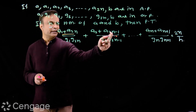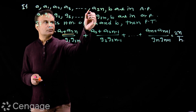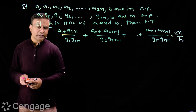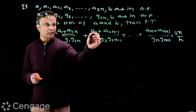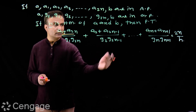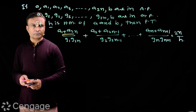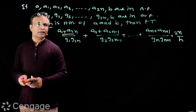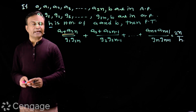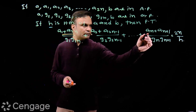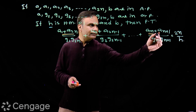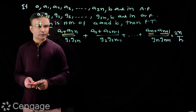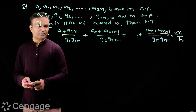Then a2 plus a2n minus 1 — a2n minus 1 is the term occurring before this. This sum is also a plus b, because a2 is the second term from the start and a2n minus 1 is the second term from the end. In the next term also the numerator will be a plus b. In fact, in all the terms the numerator will be a plus b.